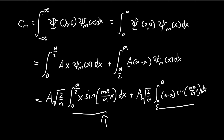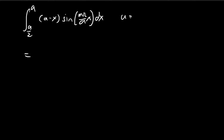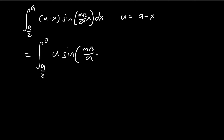Now we've found the first integral, equal to i. For the second integral, it goes from a/2 to a, and we have (a minus x) times sine of m pi over a times x dx. Rather than repeating integration by parts, we use the substitution u equal to a minus x. The lower bound remains at a/2, the upper bound becomes 0, (a minus x) becomes u, and dx becomes negative du.